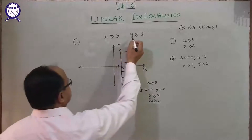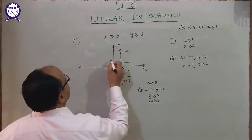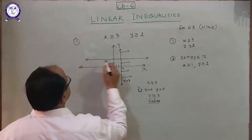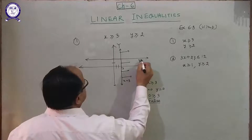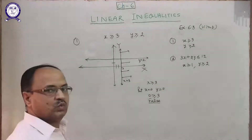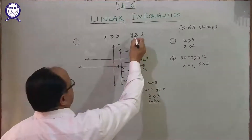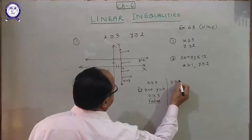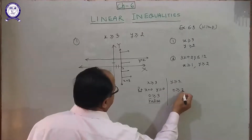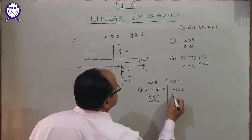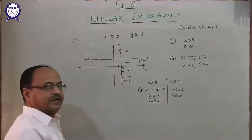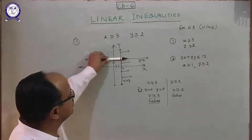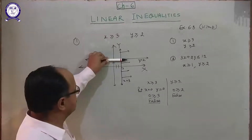For the second inequality, y equals 2: draw the line parallel to the x-axis at y equals 2. Put x equal to 0 and y equal to 0 in y greater than or equal to 2. Then 0 greater than 2 is false. Therefore the shaded region is away from the origin — meaning this upper portion.